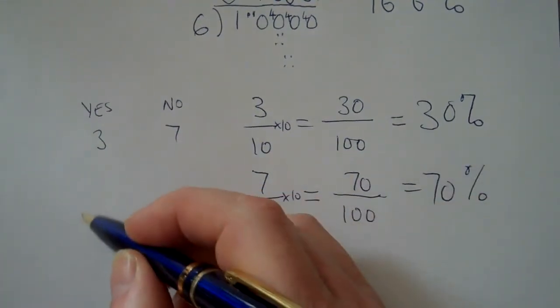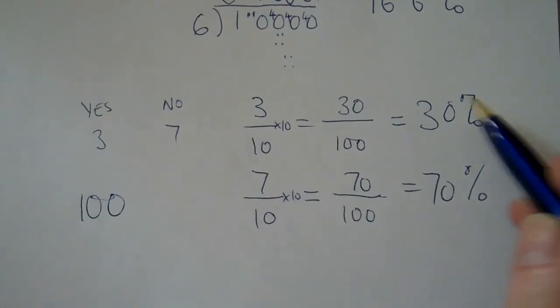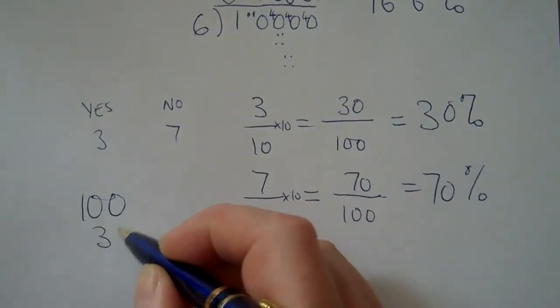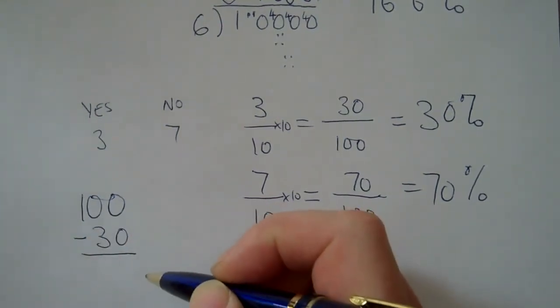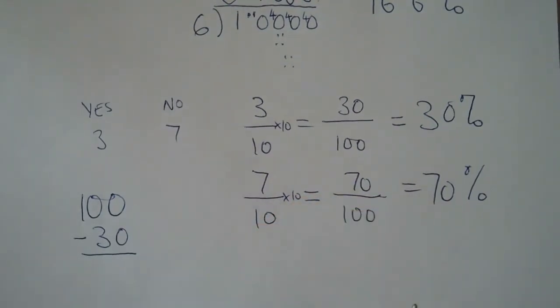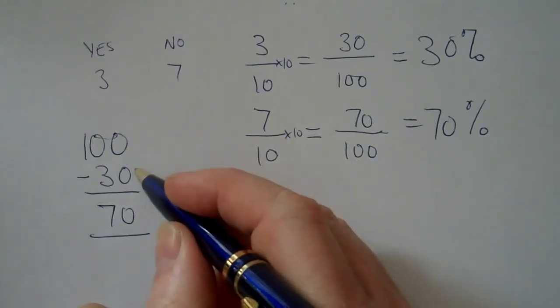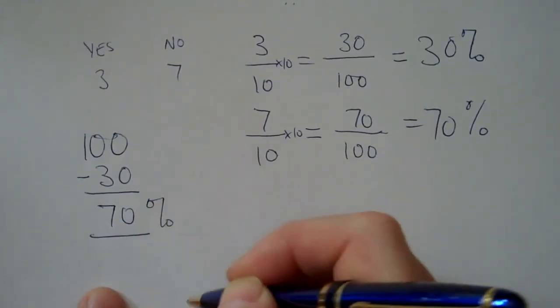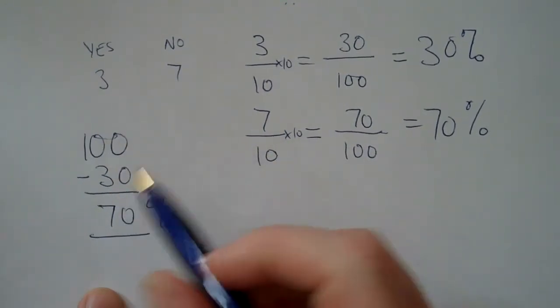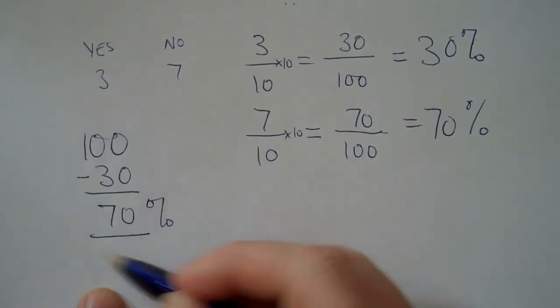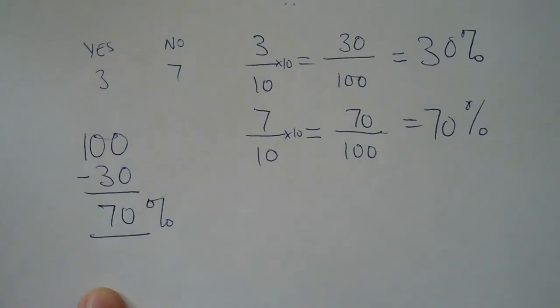We could have done the same thing with the percentages as well, couldn't we? We could have said, well, a hundred people we asked in all, and of those hundred, then thirty would have said yes that they did. So if we take thirty away from a hundred, we'll find the total number of people that would have said no. And a hundred minus thirty is seventy. So if thirty percent said yes, then seventy percent must have said no. Because in general, all the groups added together would need to make up one hundred percent. So you can easily take things away from a hundred to find out what percentage is left.